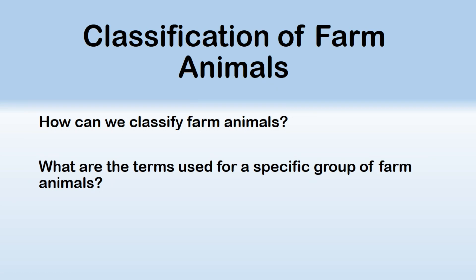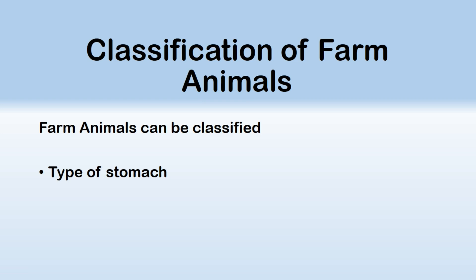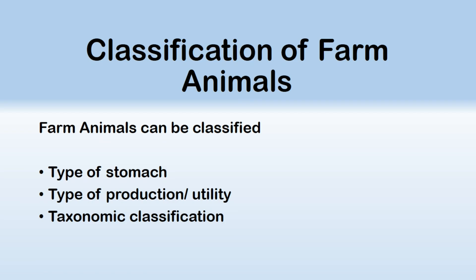So how can we classify these animals, and what are the specific terms which are only used for one group of animals? These animals can be classified according to the structure of their stomach, they can also be classified according to what they produce, and there is also a general scientific or taxonomic classification. But in this video I will only be talking about the classification on the basis of their stomach and the classification on the basis of what they produce.